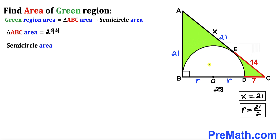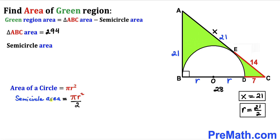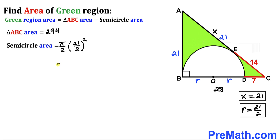Now calculating the area of the semicircle. The area of a full circle is πr², so the semicircle area is πr²/2. With r = 21/2, the semicircle area = π/2 × (21/2)² = 441π/8.